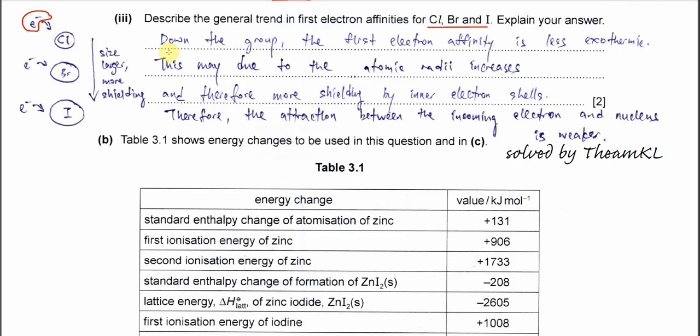So all these halogens, these gaseous atoms, will gain electrons from outside. First you need to mention the trend, the general trend. Down the group, the first EA is less exothermic. This is the trend you must explain or give before you explain. It becomes less exothermic. Why? Because the bonding or attraction between the incoming electron and the halogens becomes weaker. Means the energy that's released from the iodine gaseous atom with the incoming electron is lesser, because the bonds that form between them are weaker. Why is it weaker? Because of the size. First thing you must mention is the atomic radii. This may be due to the atomic radii increasing. Down the group, the size increases.